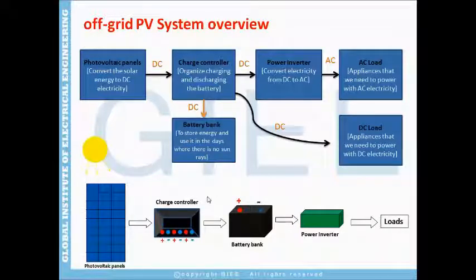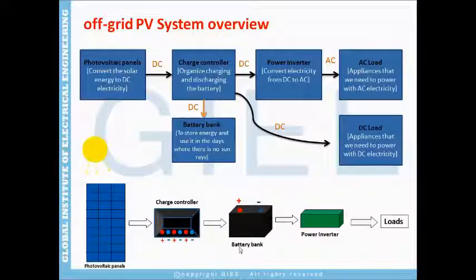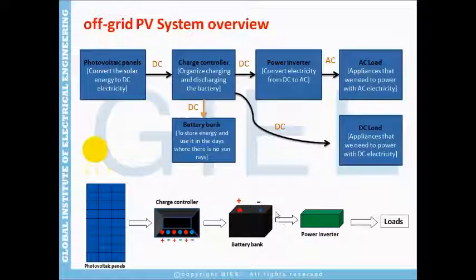The photovoltaic panel converts solar power to direct current DC electricity. Then the charge controller regulates the current flow between the photovoltaic panels into the battery bank — the charge controller acts as a regulator. The battery bank stores energy to use at night or on days with no sun, and then supplies the power inverter with DC electricity. The power inverter converts DC electricity to AC electricity to power our loads.